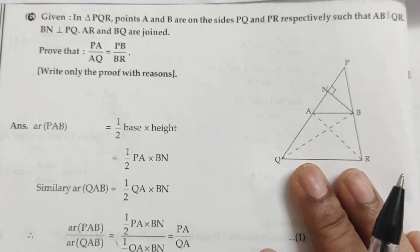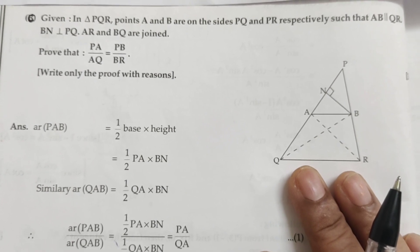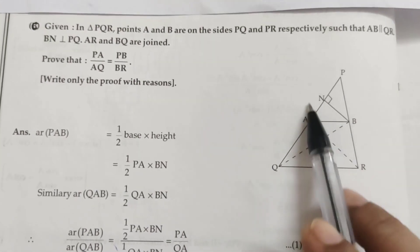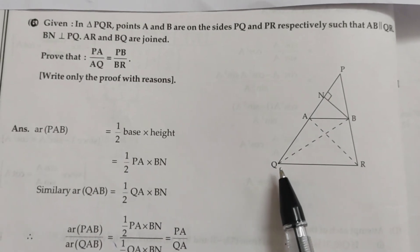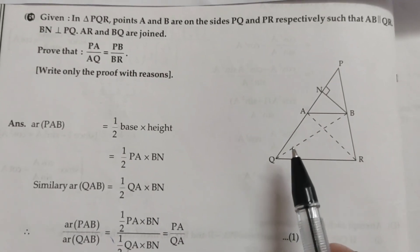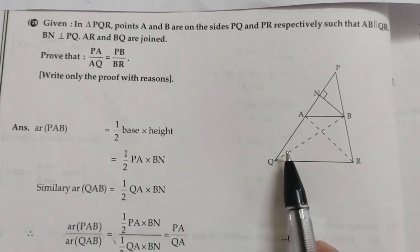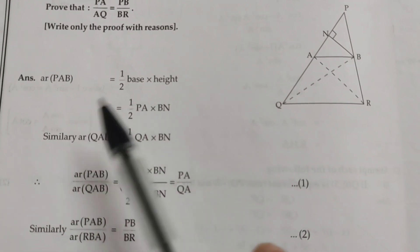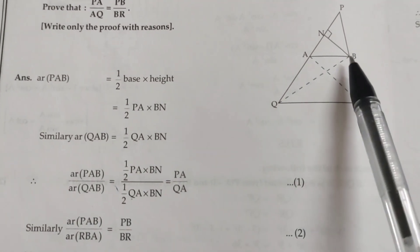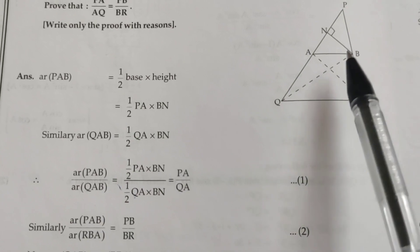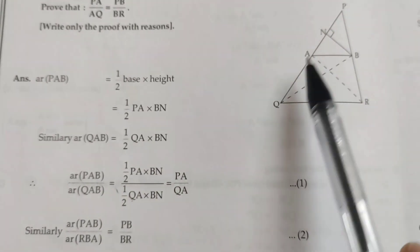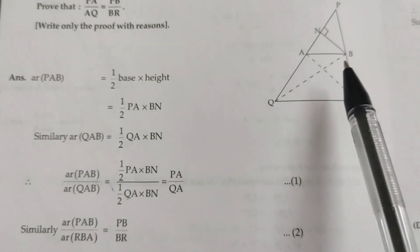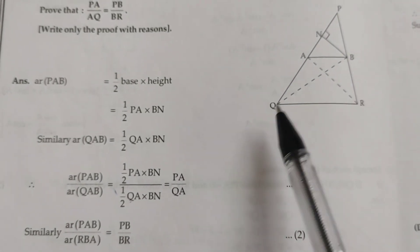Next question: In triangle PQR, points A and B are on sides PQ and PR respectively such that AB is parallel to QR and BN is perpendicular to BQ. Prove that PA/AQ = PB/BR. Area of triangle PAB = ½ × base × height = ½ × PA × BN.